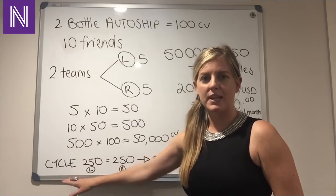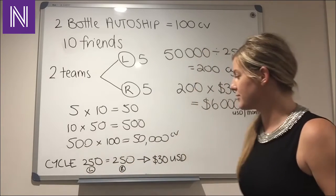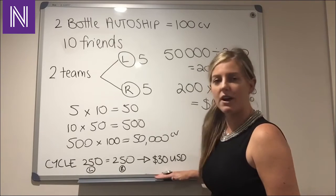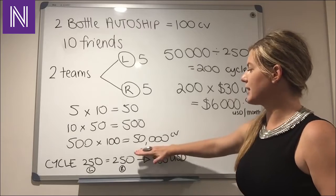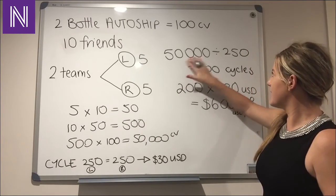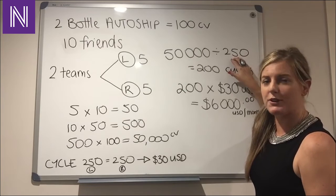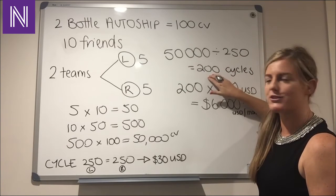Now what a cycle is, it's basically 250 points on your left, 250 points on your right and that's the equivalent of $30 US dollars. Now what does that mean in relation to this 50,000 CV is 50,000 divided by 250 means that we've got 200 cycles.